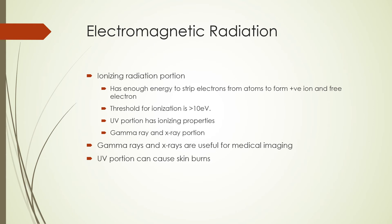The electromagnetic spectrum starts to become ionizing in the UV region and continues through x-rays and gamma rays. Ionizing radiation has enough energy to strip electrons from atoms to form a positive ion and a free electron. The threshold for ionization is energy greater than 10 electron volts. In some books, you may see the threshold as 13.6 electron volts, which is the energy needed to remove an electron from a hydrogen atom. The x-ray and gamma ray portions have more energy than the UV portion and can cause more ionization and also DNA damage. Gamma rays and x-rays are useful for medical imaging.